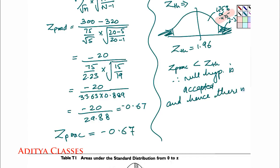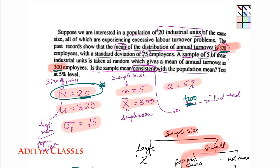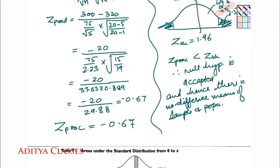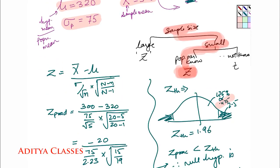And hence there is no difference between means of sample and population. And if you wish you can add, hence this sample is consistent with population. This is your analysis of the given problem. The sample is consistent.